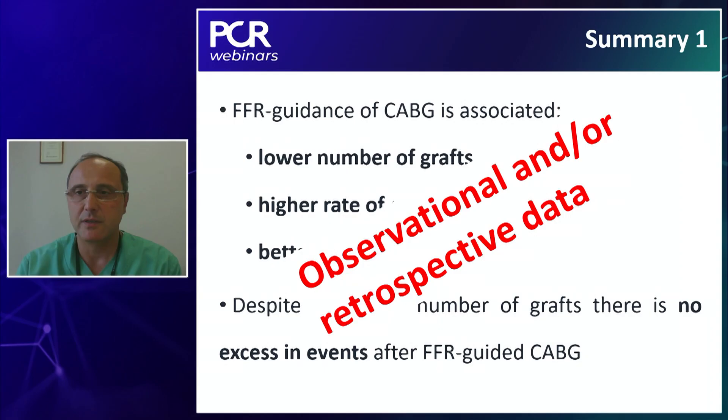This goes hand-in-hand with the premise made at the beginning: we have very limited data available, mostly derived from single-center registries. But we'll see in the second part that some randomized data are also available. There are no burning questions from the chat so far. Let's continue with the next part of the presentation.